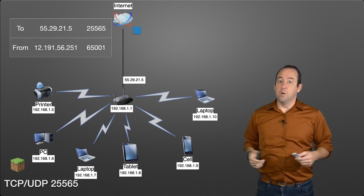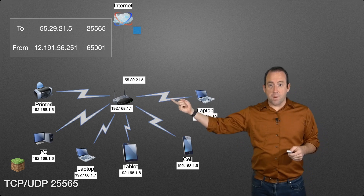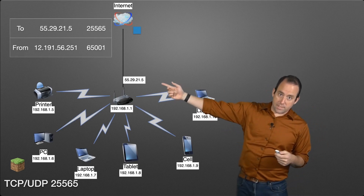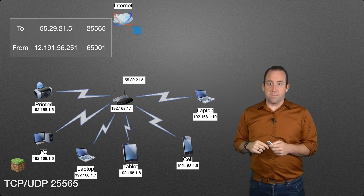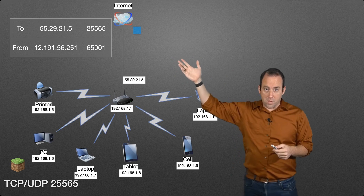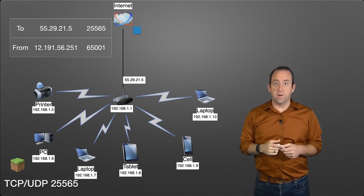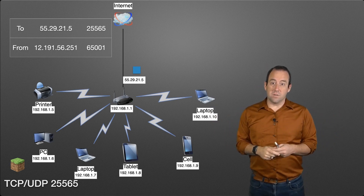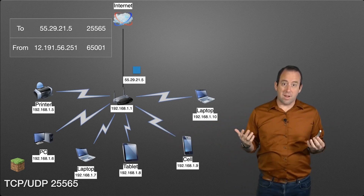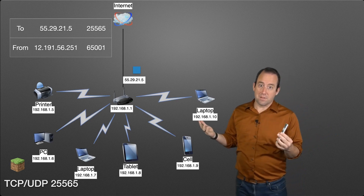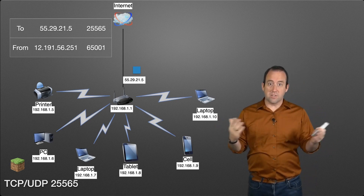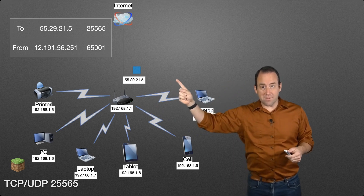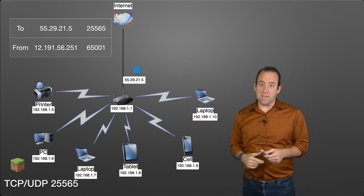But what if a friend in another state or city wants to access this Minecraft server? They need your public IP address, since that's how traffic gets across the internet to your router. They send traffic to the router's public IP on port 25565. It arrives at the router — but without port forwarding, the router doesn't know what to do with it. The router has no way to know by default that there's a Minecraft server running on the network, because devices don't share that information automatically.